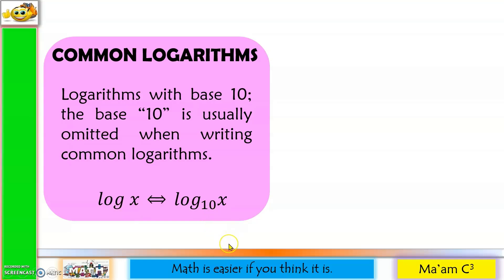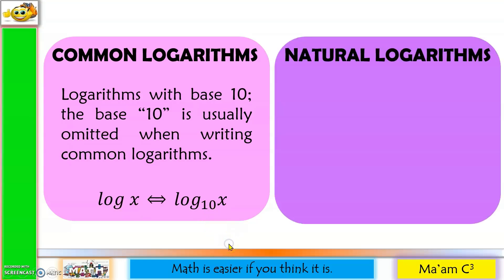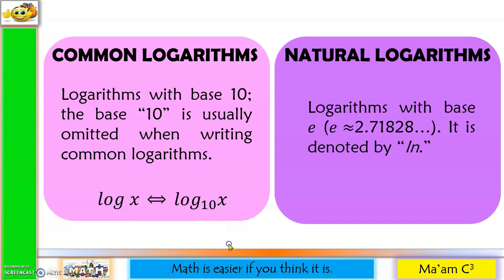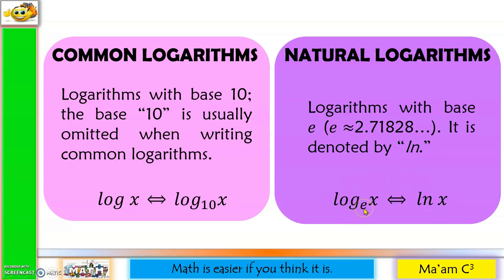We also have natural logarithms — logarithms with base e. E is an irrational number approximately equal to 2.71828. It is denoted by ln. So whenever you see the logarithm of x to the base e, that is equivalent to ln x. And when you see ln x, it means it is a logarithm whose base is e.